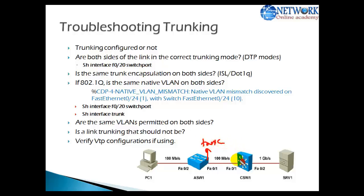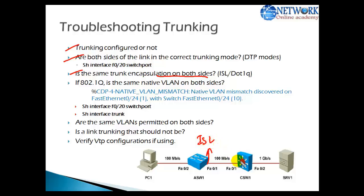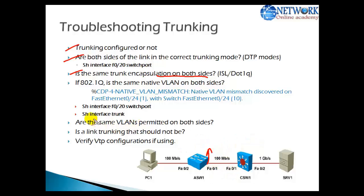The next thing to check is trunking encapsulation. If one side of the switch is configured with ISL encapsulation and the other side is running 802.1Q, a mismatch of encapsulations will also affect your trunk link — the trunk link will not be able to forward VLAN traffic between the switches. To verify this, you can use the show interface trunk command or the show interface switchport command.